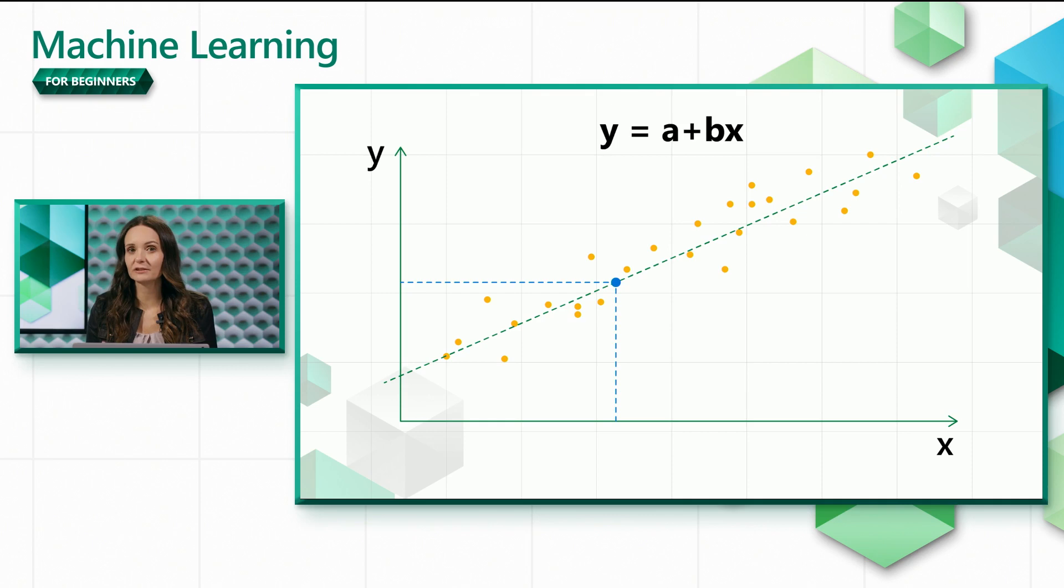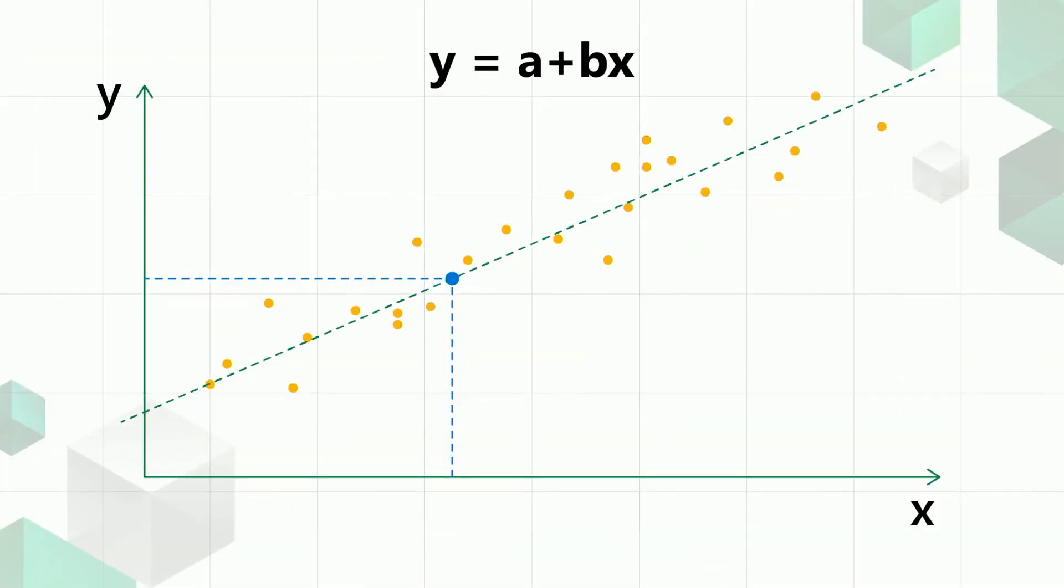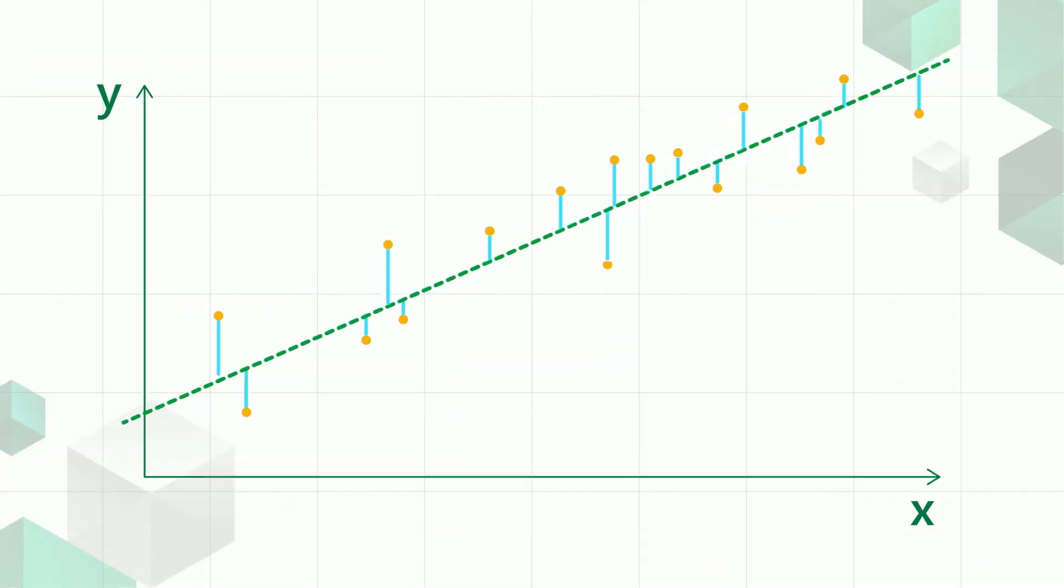Your predictions may not match the original data points perfectly. You can see in the diagram that some of the data points are above the line, others are below.